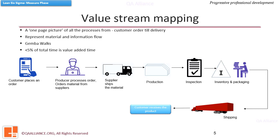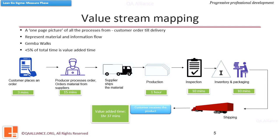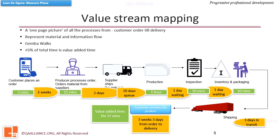Here is a simple VSM for the process of a product which starts with the customer placing an order and ends with delivery. If we draw the as-is process, we find that the value-added time — highlighted in green boxes at various steps — comes out to be 1 hour 37 minutes, while the total time a product takes from order to delivery is 3 weeks and 3 days. The non-value-adding steps are highlighted in amber. This shows how much time goes into non-value-adding activities in a process.